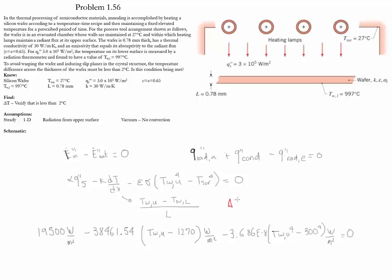In this case, delta T is equal to 2 Celsius. Using that value, we could find that the maximum value that we could have in the upper surface, and that is going to give us 1272 Kelvin.